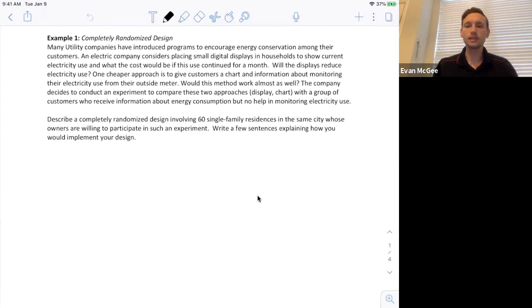Describe a completely randomized design involving 60 single-family residences in the same city whose owners are willing to participate in such an experiment. Write a few sentences explaining how you would implement your design.